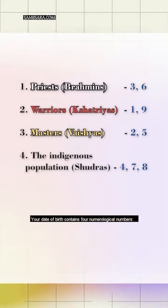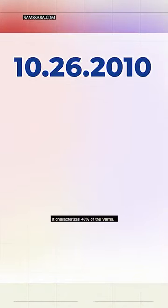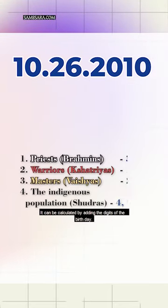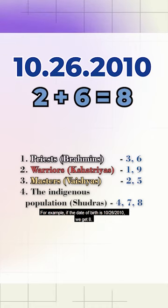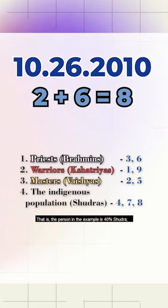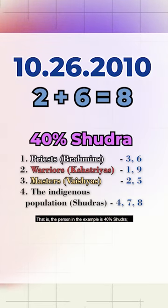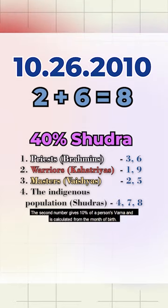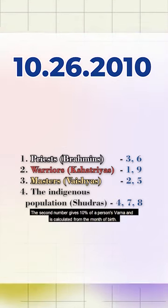Your date of birth contains four numerological numbers. The first is an individual's personality number, which characterizes 40% of the Varna. It can be calculated by adding the digits of the birthday. For example, if the date of birth is October 26, 2010, we get 8 — meaning the person is 40% Shudra. The second number gives 10% of a person.